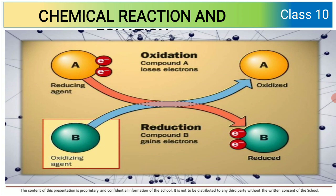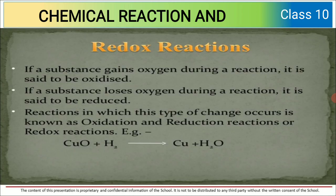Such reactions where oxidation and reduction takes place simultaneously are known as oxidation-reduction reactions, or they are also known as redox reactions. In an oxidation reaction, compound A loses electrons and compound A gets oxidized. In reduction, compound B gains electrons and B is reduced.